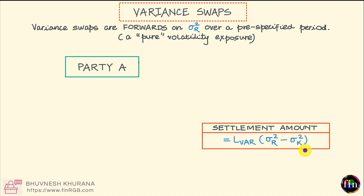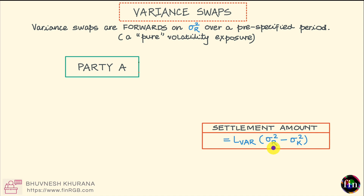This payoff is a convex function of the realized volatility. If I were to plot this payoff with respect to realized volatility, the plot would have a distinct curvature to it. This means that if realized volatility were to go up, the gains coming to the buyer of the variance swap will be boosted. If realized volatility were to go down, the losses to the variance buyer will be discounted. This convexity feature is attractive to the buyer of a variance swap.